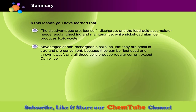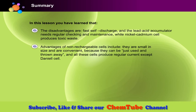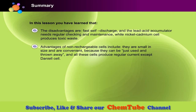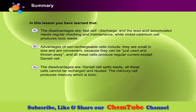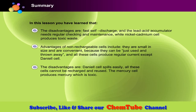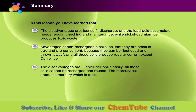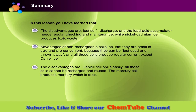Advantages of non-rechargeable cells include that they are small in size and convenient because they can be used and thrown away, and all these cells produce regular current except the Daniel cell. The disadvantages are that the Daniel cell spills easily, all these cells cannot be recharged and reused, and the mercury cell produces mercury which is toxic.